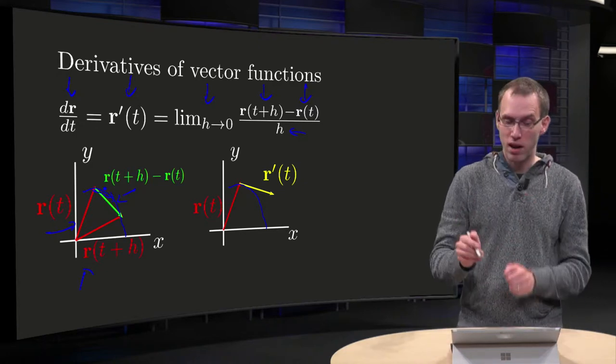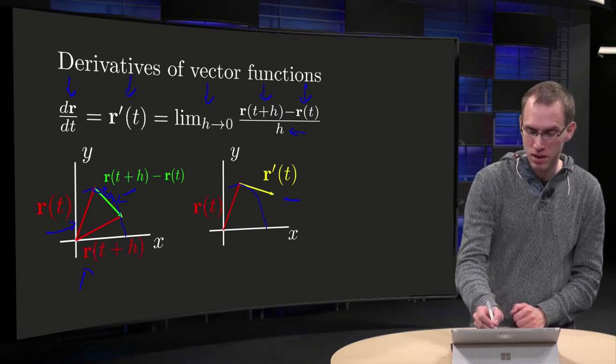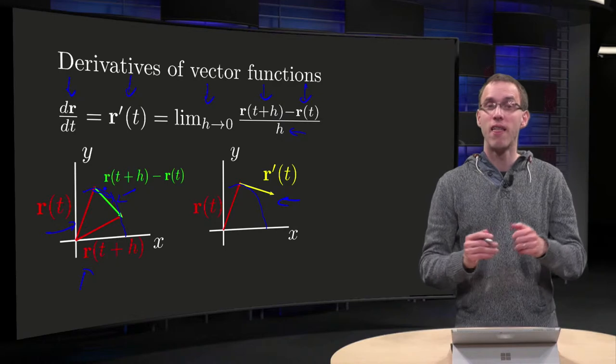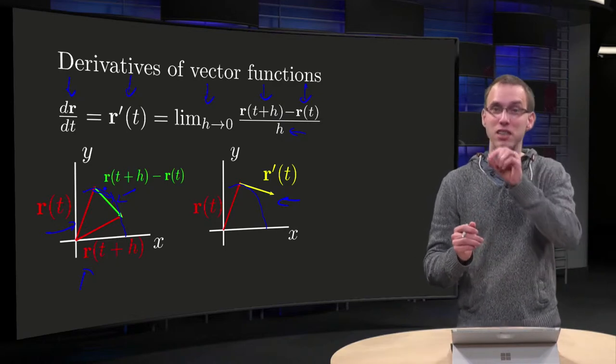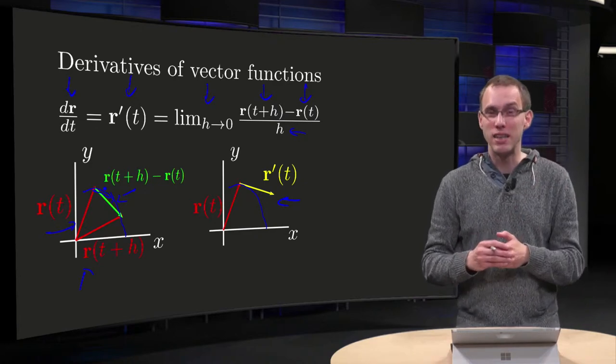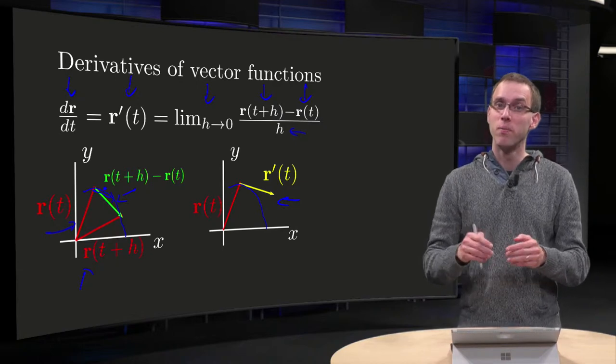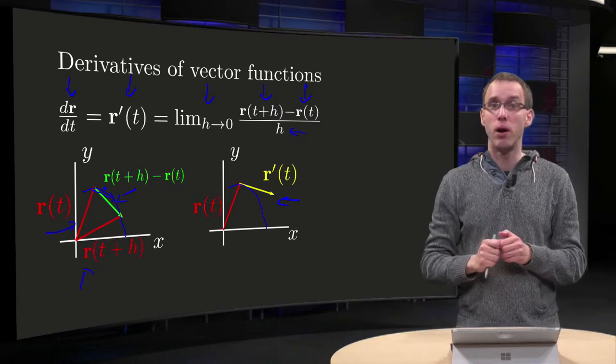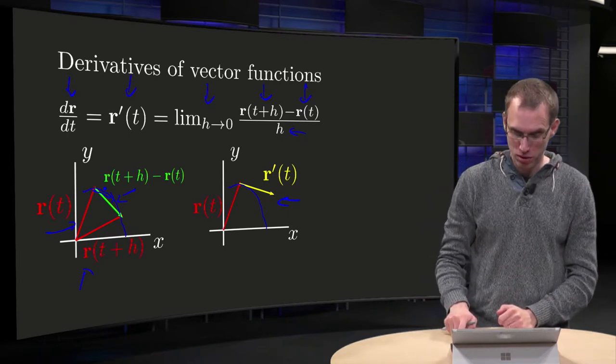And finally if you take your h arbitrarily small, you get the yellow vector over there. And you see that this r'(t) is actually the tangent vector to our space curve. The r(t) gives us the position on the space curve, the r' will give us the tangent to our space curve.